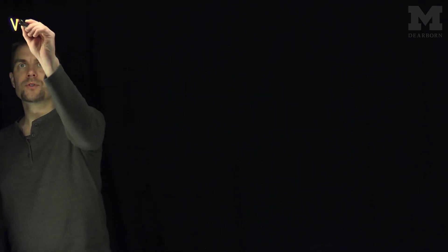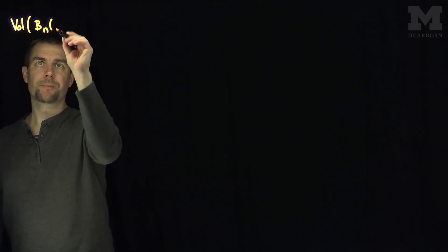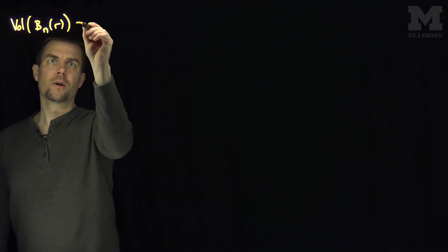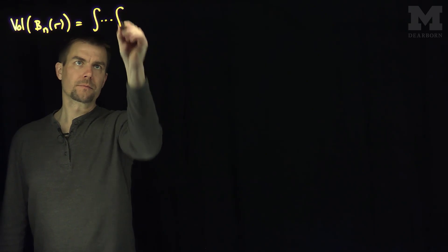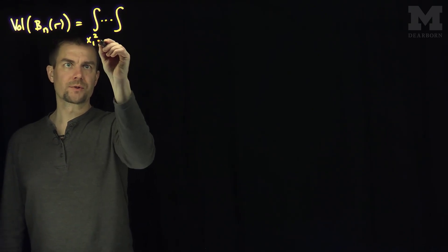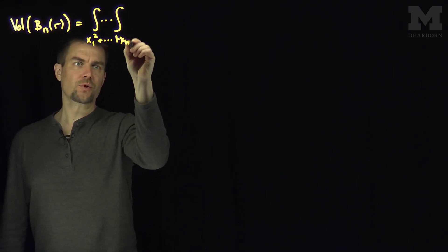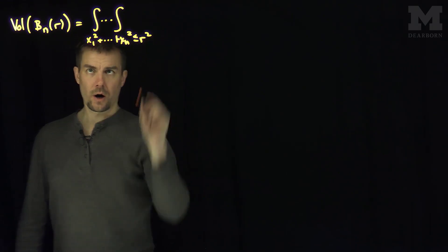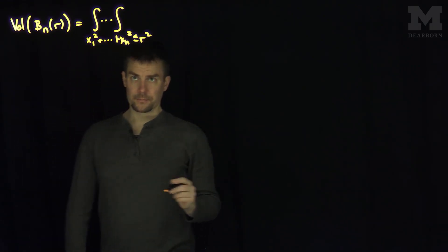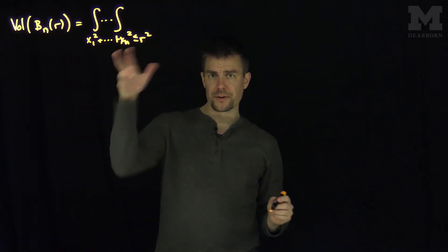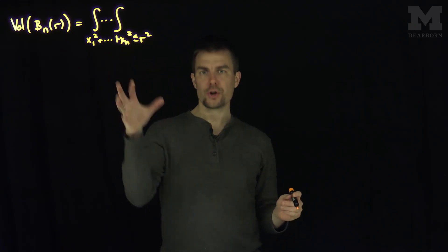Hello students. In this video we'll find the generalized volume of a ball of radius r centered at the origin. We're going to compute the generalized volume of the ball in n-dimensional Euclidean space of radius r, which will be n integrals over the set of points x1 squared plus xn squared less than or equal to r squared. The first thing we'll do is pull out this r squared to put things in terms of the unit ball.